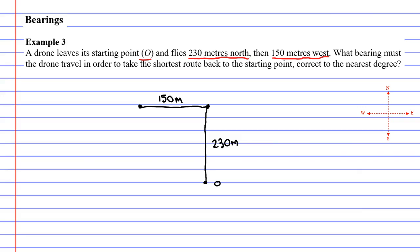Okay, it's asking us what bearing we must take in order to take the shortest route back to the starting point. Now we started at the origin and our drone, I'm going to label it with a D, is currently at this point here, and in order to get back to the point of origin or the starting point, the drone needs to travel in a straight line that I've just drawn now. So we need to figure out the bearing the drone needs to take.